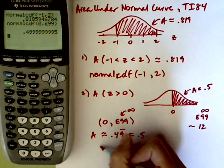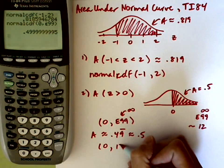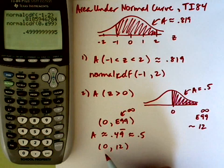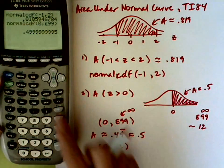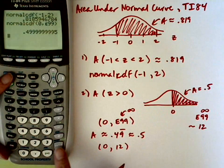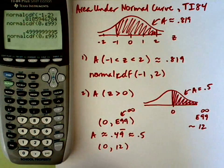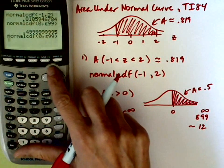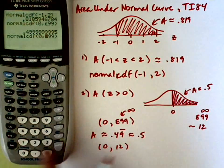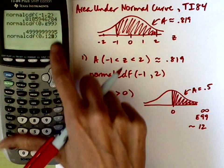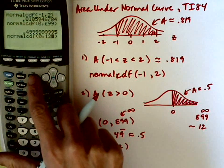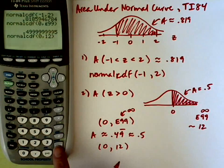But look what happens when I put in something like 12 instead. So I'm going to go ahead and do normal CDF with a 12 instead. Rather than going to the distribution menu, I'm going to go second entry. So second entry to grab that last input, but I can edit it now. So I'm going to go over to the e99, I'm going to type a 12 right over it. I want to get rid of the 9, so I hit the delete key.